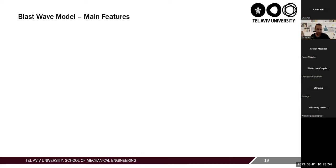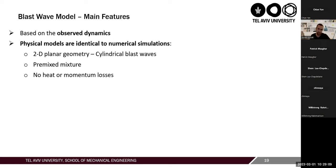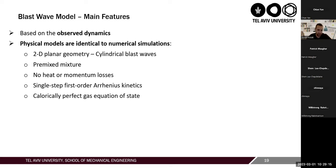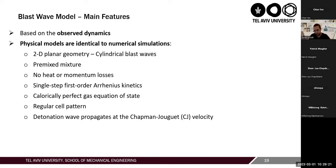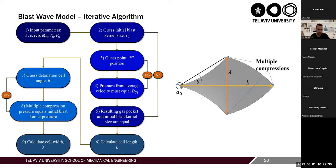The blast wave model we developed is based on observed dynamics, and the physical models used are identical to our numerical simulations: 2D planar geometry (cylindrical blast waves), premixed mixture, no heat or momentum losses, single-step pure Arrhenius kinetics, calorically perfect gas equation of state, and regular cell pattern with detonation wave propagating at CJ velocity. All these assumptions are the same as our numerical model, and as a result, this simplified model is governed by exactly the same three dimensionless groups.